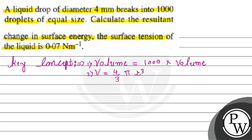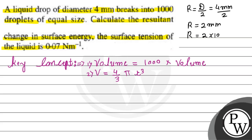Let's extract the given things. The diameter of the bigger drop is 4 mm, so the radius R = D/2 = 4 mm / 2 = 2 mm, which equals 2×10⁻³ meters. The surface tension S is given as 0.07 newton per meter.